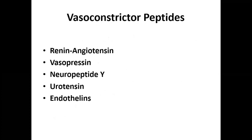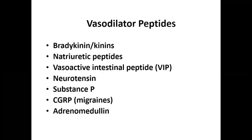Examples of vasoconstrictor peptides are renin-angiotensin, vasopressin, neuropeptide Y, urotensin, and endothelins. Examples of vasodilator peptides are bradykinin or kinins, natriuretic peptides, VIP (vasoactive intestinal peptide), neurotensin, substance P, CGRP, which is related to migraines, and adrenomedullin. We are going to see the various actions of both vasoconstrictors and vasodilators.